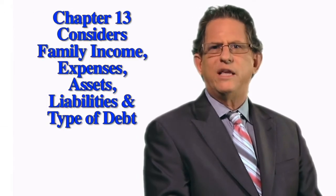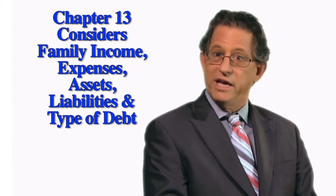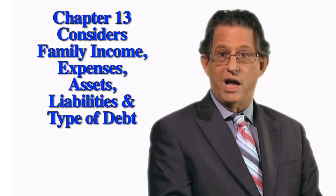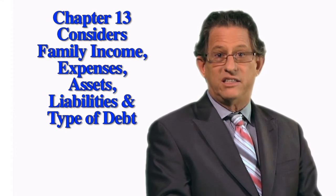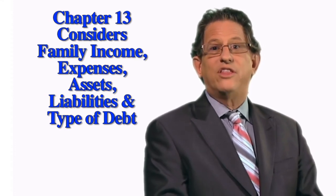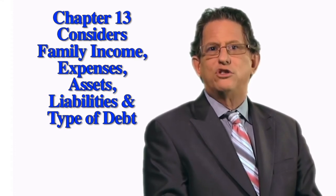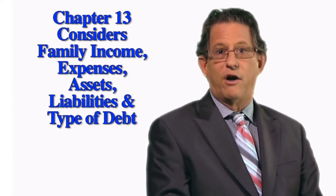Thus, a Chapter 13 plan takes into consideration your family income — do you pass the means test or not — your assets, do you have significant non-exempt assets that would be in jeopardy in a Chapter 7, and the type of creditors that are pursuing you: secured, unsecured, or priority. Does it sound complicated and nuanced? You bet it is. This is just the beginning. Stay tuned.